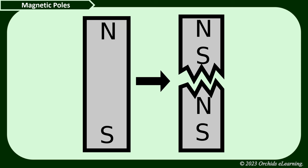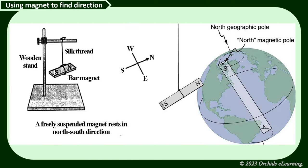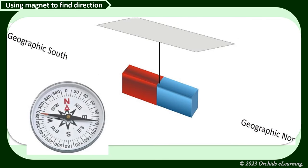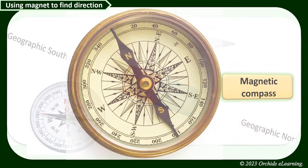If a magnet is allowed to move freely, it comes to rest in a direction very close to the earth's north-south direction. This property of magnets was used by travelers to find directions on the surface of the earth. An instrument with a magnet used to find directions is called a magnetic compass.